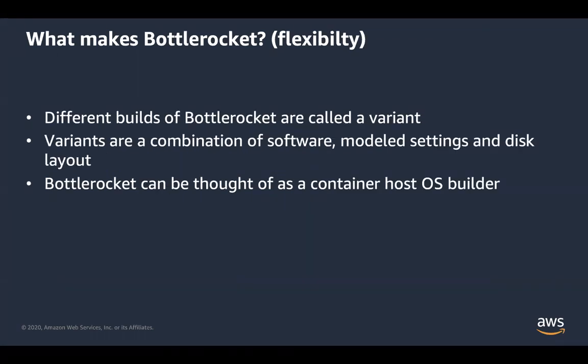We also wanted the OS to be flexible. There are multiple orchestrators for containers and multiple cloud environments, and we wanted to build an OS that could support all of that. We allow for different builds, and we refer to them as variants. Every variant of BottleRocket is essentially a combination of software settings and disk layouts used to build an actual image of the OS. Think of BottleRocket as a container host OS builder — you provide your spec and settings, then use the BottleRocket SDK to build the finalized OS, or you can leverage one we provide through AWS.